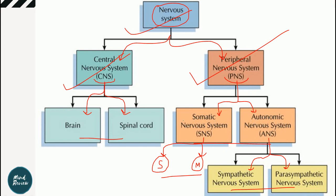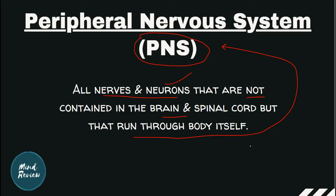For all these things — brain, spinal cord, SNS, ANS, sympathetic and parasympathetic, sensory and motor system — we have made separate videos in the coming days. We have made individual videos for each thing because one long video would reduce your attention span. Today we discussed central nervous system and peripheral nervous system; in the next days we will cover the brain, spinal cord, and other parts.